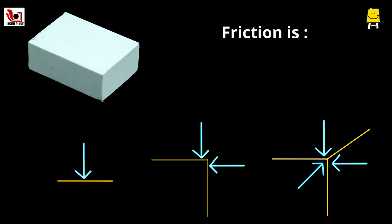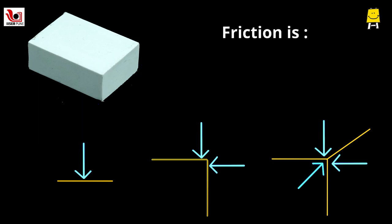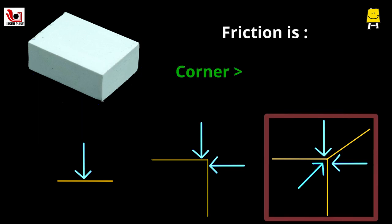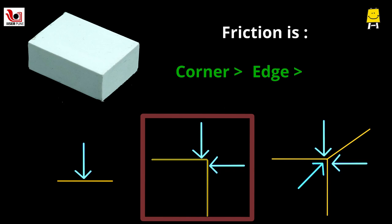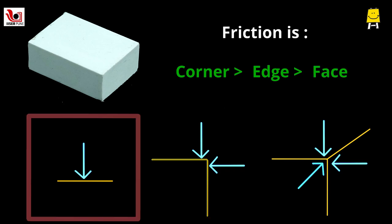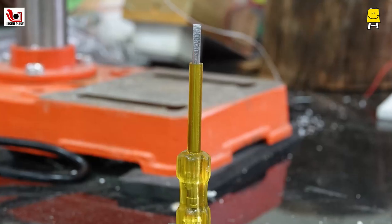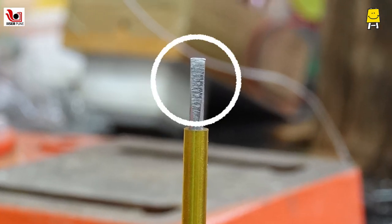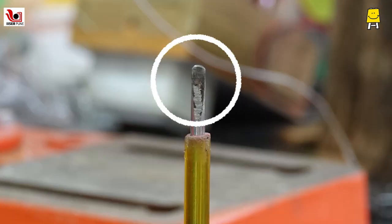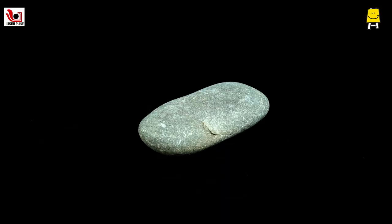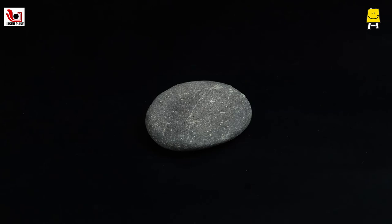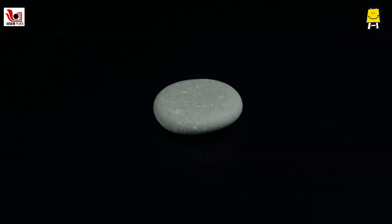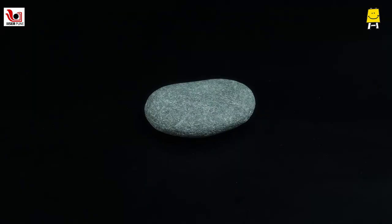The net friction is highest at the corners, followed by the edges and least at the faces. This makes sharp edges and corners blunt. We find many such examples in our surroundings. Let's look around and find objects whose corners have turned blunt due to friction. See you soon.